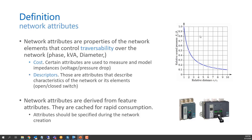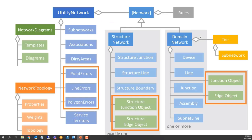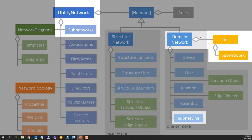Network attributes are properties used to control traversability. Descriptors describe characteristics such as open/closed state; cost attributes represent values like voltage or pressure drops. Sub-network management covers connected sub-portions of the network used for analytics, labeling, visualization, or assigning units of work — corresponding to circuits in electric, pressure zones in gas and water, and trunk lines in wastewater. The information model changes in version 4 include junction objects and modifications to point, line, and polygon error handling relative to subnetwork management.